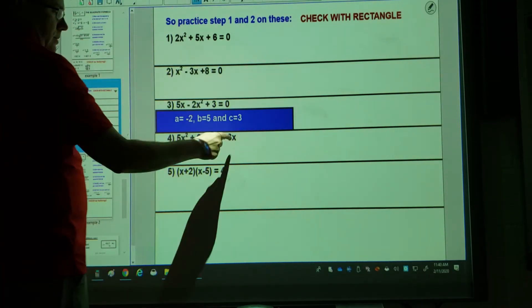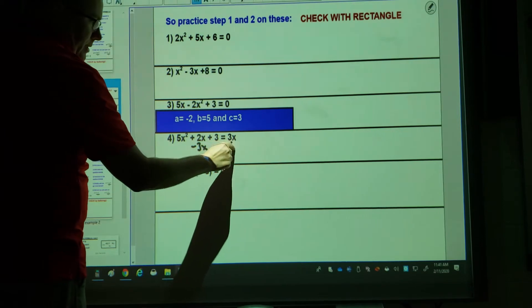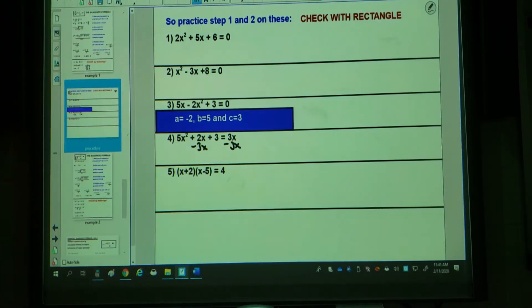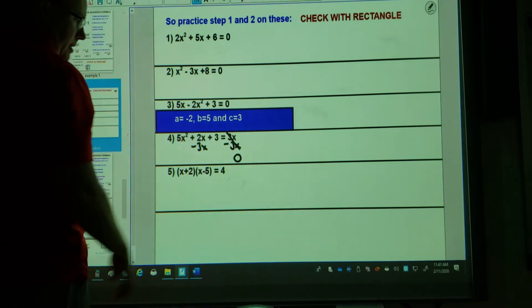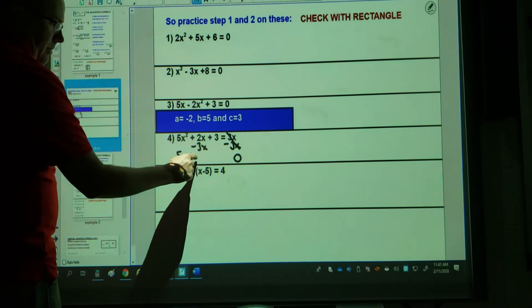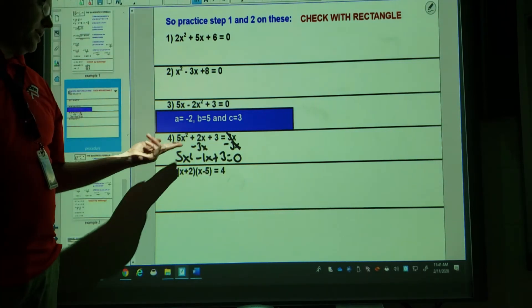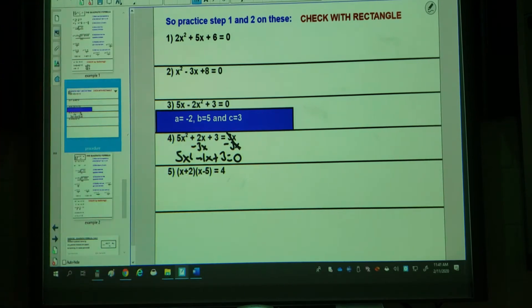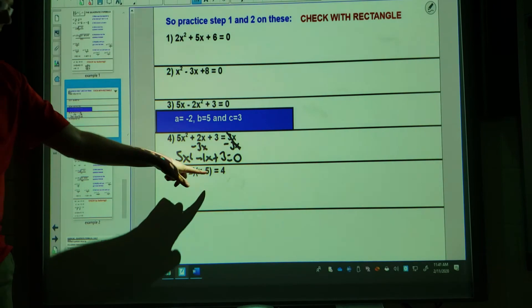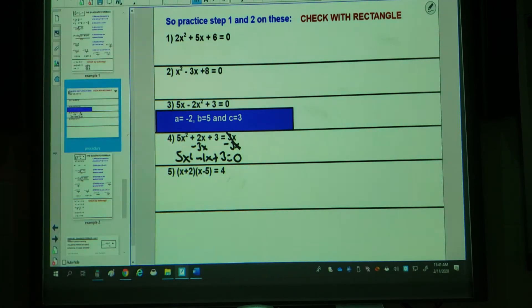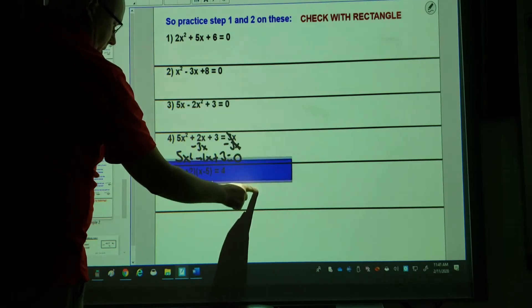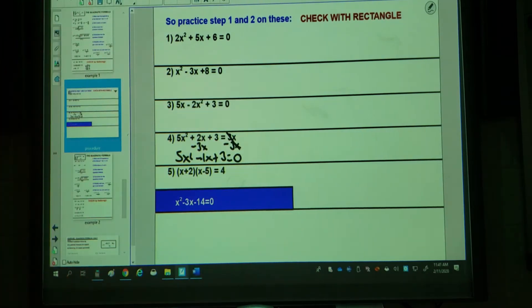As we get to question 4, if it doesn't equal 0, like last lesson you want to make it equal 0 by moving it to the side by doing the inverse. So 3x take away 3x is 0. 2 take away 3x is negative 1x, and then I've still got my plus 3. So on this question, a would equal 5, b would equal negative 1, and c would equal 3. For the adventurous amongst you, you might want to try doing a foil on this, multiplying it out, bringing the 4 across to the side so it does equal 0. You should end up with a is 1, b is negative 3, and c is negative 14. Being able to pick out a, b, and c is really important. Numbers 1 and 2 are how most questions are actually going to look though.